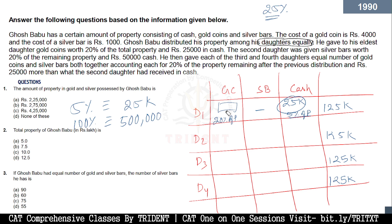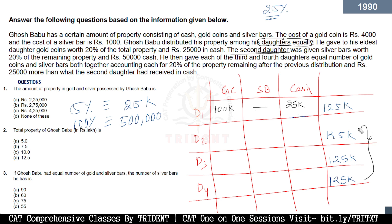20% of 5 lakh is 1 lakh, so I'll write 100k in gold coins and 25k in cash for the first daughter — no silver bars. The second daughter is getting silver bars worth 20% of the remaining property. After the first daughter's share, the remaining property is 500k minus 125k = 375k. 20% of 375k is 75k. So the second daughter gets silver bars worth 75k and 50,000 in cash — no gold coins. This also adds up to 125k.